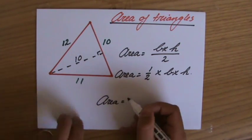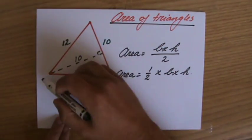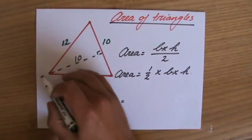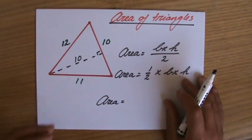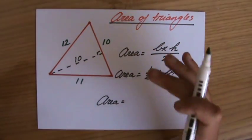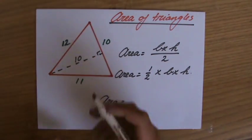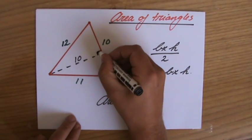Because in this particular example question, they're giving me so many numbers: 12, 10, 11, 10. But the base and the height make an angle of 90 degrees. Now, where do I see that angle of 90 degrees? I see it here.